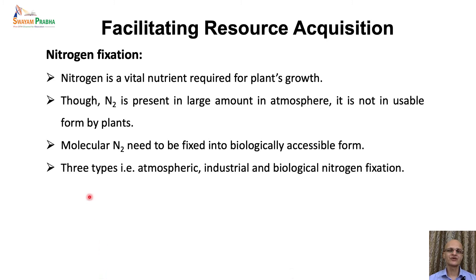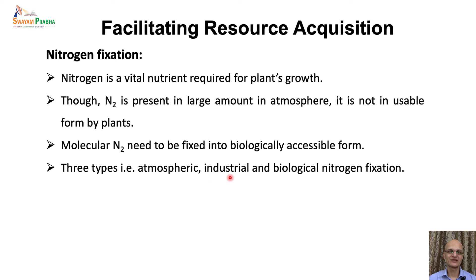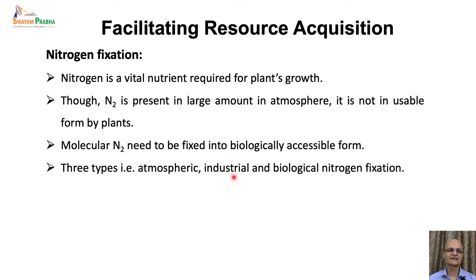There are three major ways through which molecular nitrogen is fixed into a plant-usable form. First is atmospheric nitrogen fixation, which results from lightning discharge in the atmosphere. Second is industrial nitrogen fixation, done through the Haber-Bosch process. Though the majority of fixed nitrogen used in agricultural systems is generated through the Haber-Bosch process, it uses fossil fuel-derived energy and hence would not be sustainable.